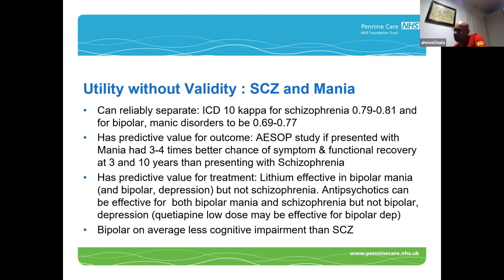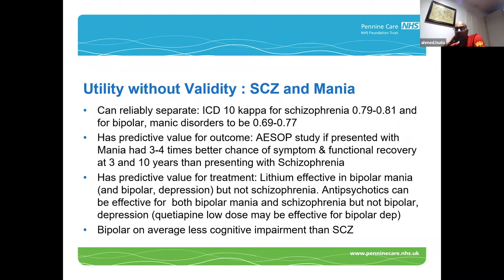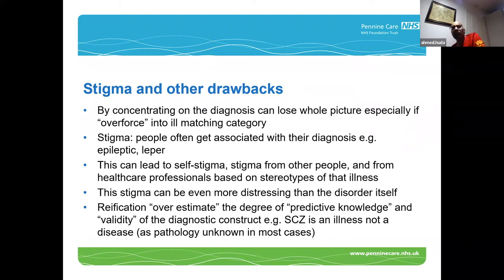Some people suggest that psychosis diagnoses don't have validity because you can't separate them clearly at cross-sectional symptoms sometimes, but longitudinally you usually can. Even cross-sectional symptoms have high reliability for recognizing them and they do have predictive value. Manic psychosis tends to have a better outcome than schizophrenia psychosis. We use lithium in bipolar disorder, not schizophrenia, but some treatments work for both, such as antipsychotics. Antidepressants in schizophrenia don't cause mania, but they can in bipolar disorder. Bipolar on average has less cognitive impairment than schizophrenia.